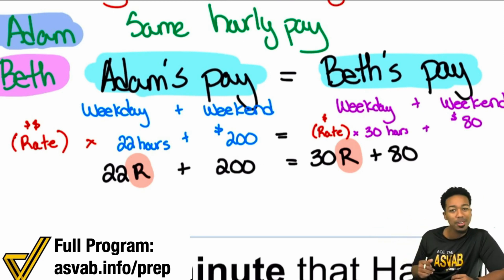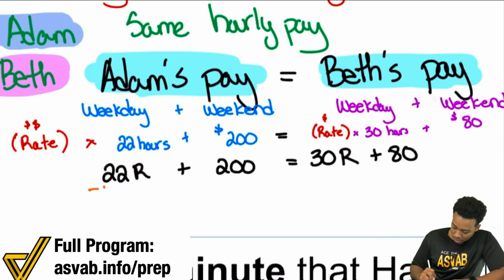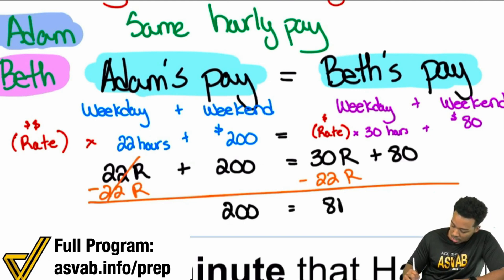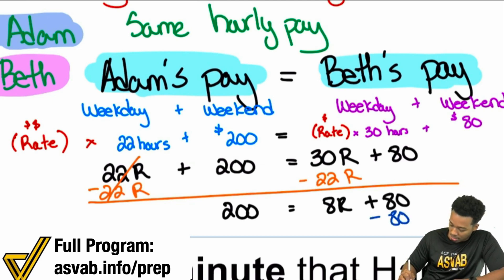So let's get to it and solve this. The way we're going to solve this — I see an easy way here by just subtracting 22R from both sides. That's going to leave me with 200 = 8R + 80.